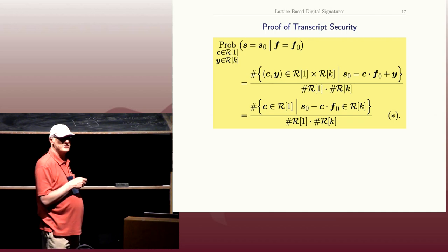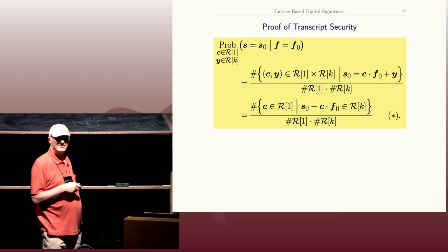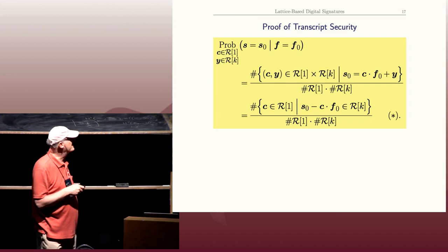So second line to third line is just reinterpreting this count. And now we have to compute this. And this is where the magic happens. It's not really magic, it's very elementary algebra.